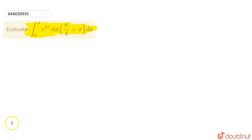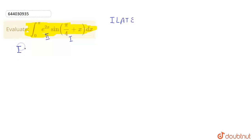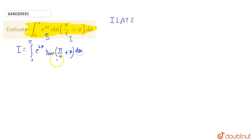For solving this question we follow the integration by parts method. Using the ILATE rule, we take the first part and the second part accordingly. Let us assume the value of this integration is I, so I is basically the integral from 0 to π of e^(2x) · sin(π/4 + x) dx.